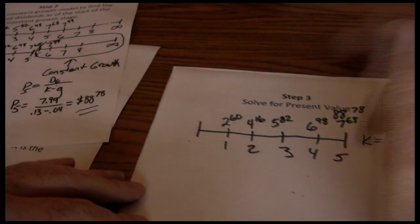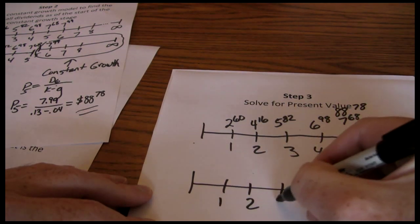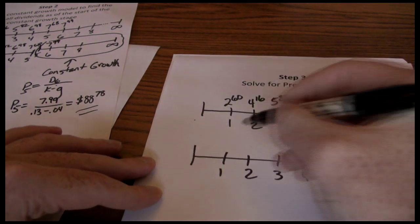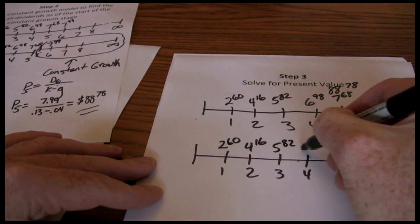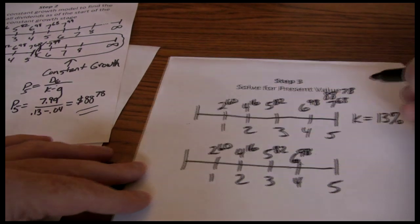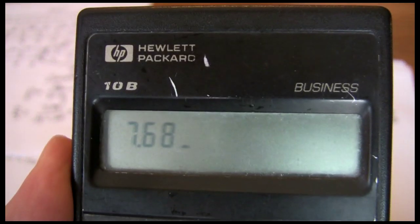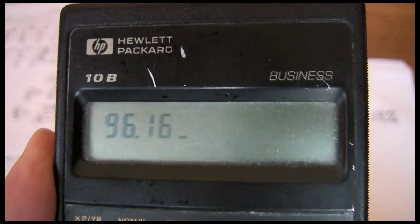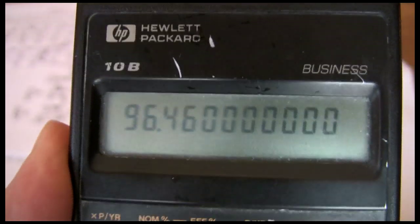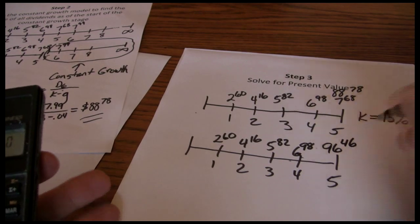So now our timeline looks like the following. The $7.68 plus the $88.78 gives us a net cash flow in year five of $96.46. That's what we put on our year five.